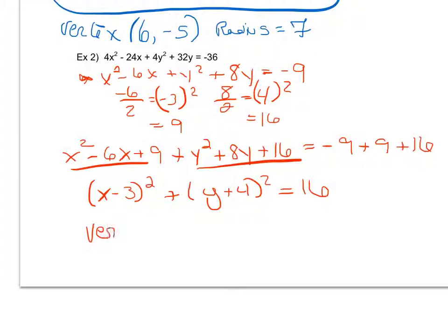I list my vertex. My h, k, h coming from the x portion. So I get an h of 3, a k of negative 4. And I have a radius of the square root of 16 which is just 4.